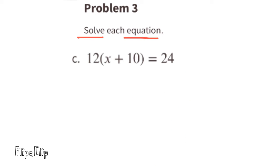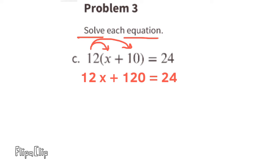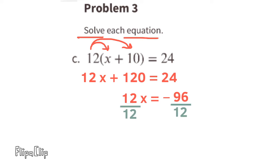Part c: 12 times (x plus 10) equals 24. Distribute: 12 times x is 12x, and 12 times 10 is 120. So 12x plus 120 equals 24. Subtract 120 from both sides, then divide both sides by 12. x equals negative 8.